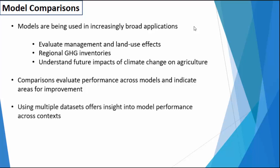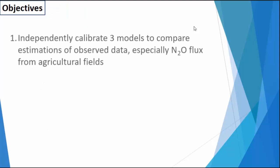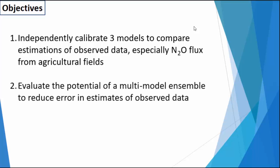We wanted to use multiple data sets to represent multiple contexts that the models are often applied in, and give a general idea of how the models were performing — not necessarily in a specific data set or a specific place on the landscape. We also wanted to look at the use of a multi-model ensemble to either improve estimates of N2O or reduce error. A multi-model ensemble simply means taking the average of individual model estimates and then comparing that average against observed data.